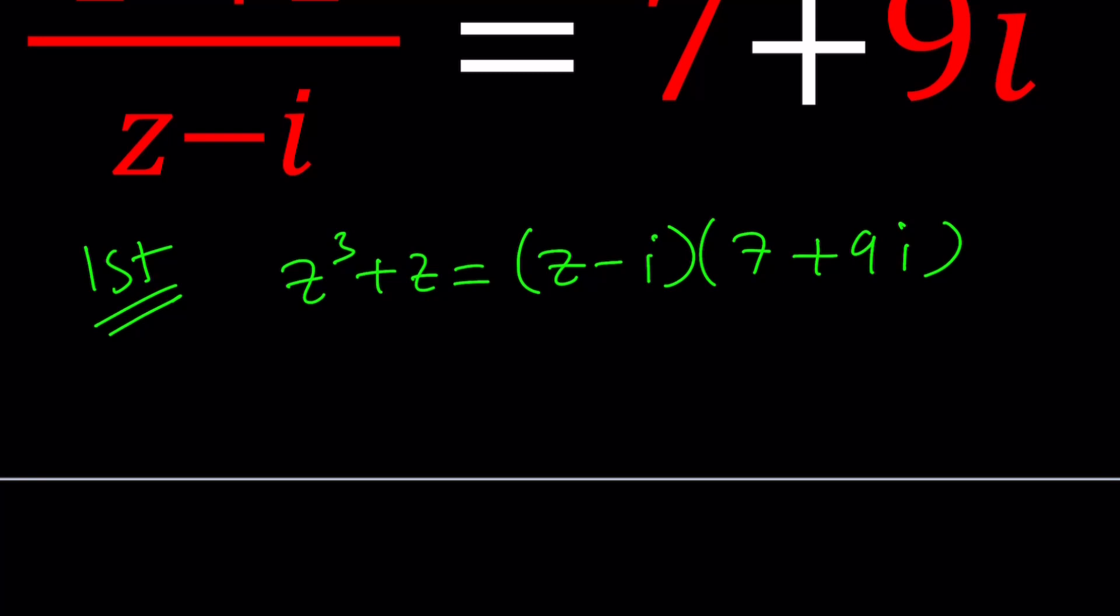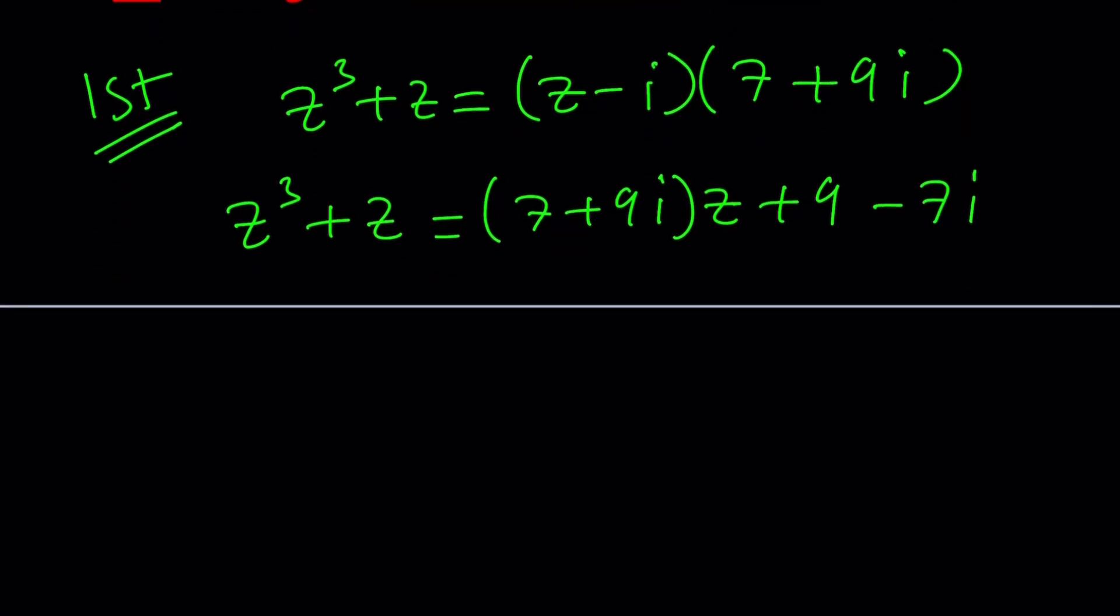Now, if you distribute this preserving the powers of z, you're going to get z³+z equals 7+9i multiply by z. Then we distribute the negative i, which gives us -7i-9i², which is +9. So I could write this as 9-7i plus 9-7iz, which looks a little better. Now let's see how we can put the z terms together.